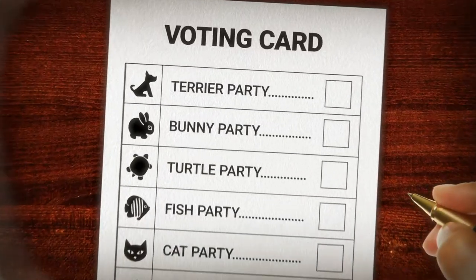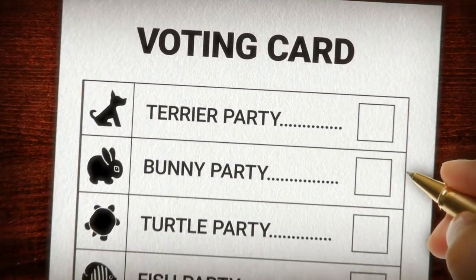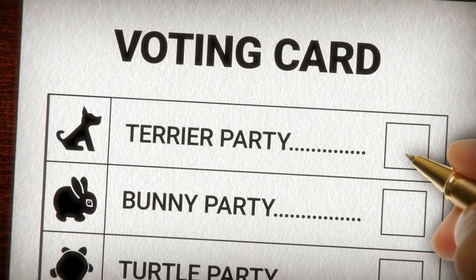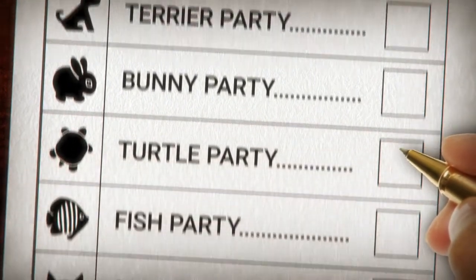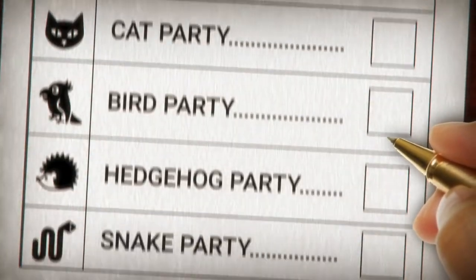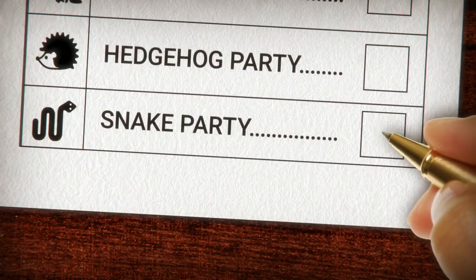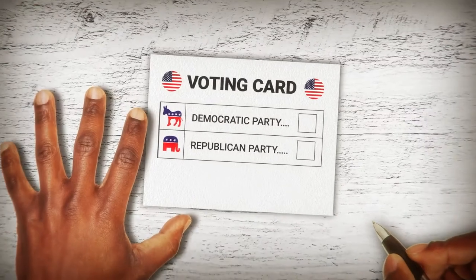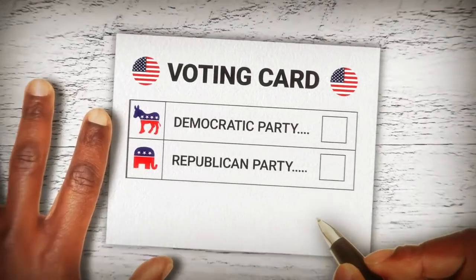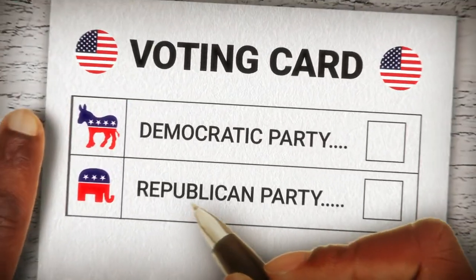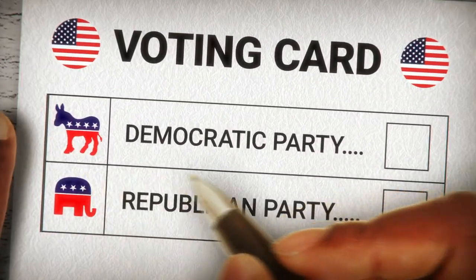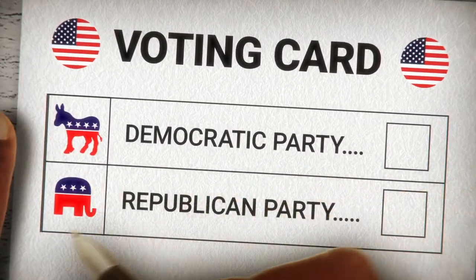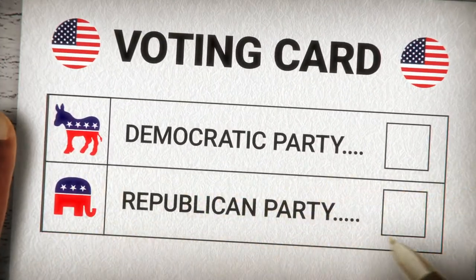Unlike other democracies around the world, where people can vote for political parties representing many different interests, the United States is essentially a two-party system, with the Democratic Party and Republican Party dominating most elections.